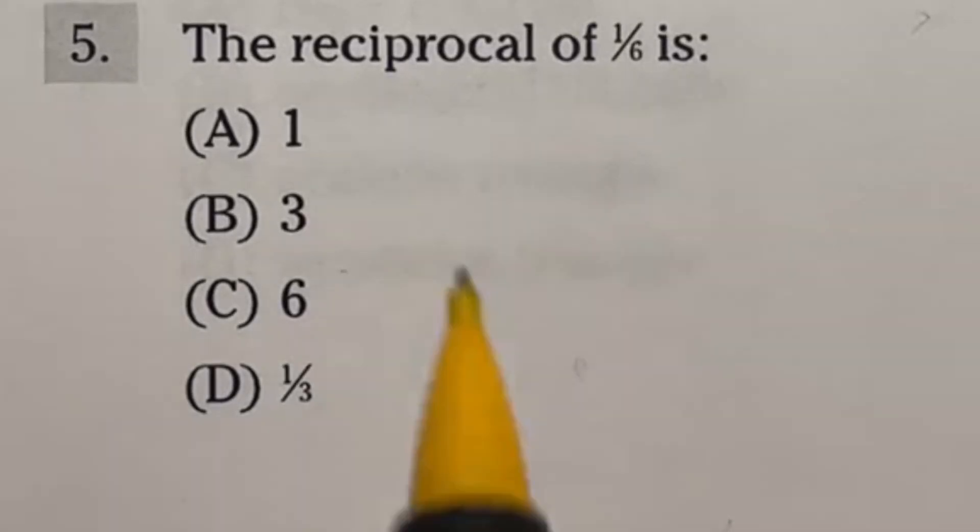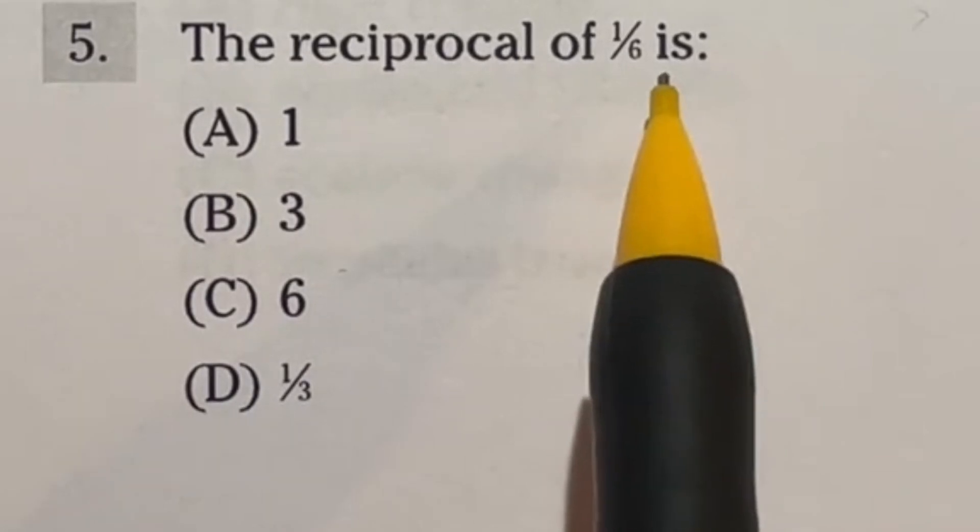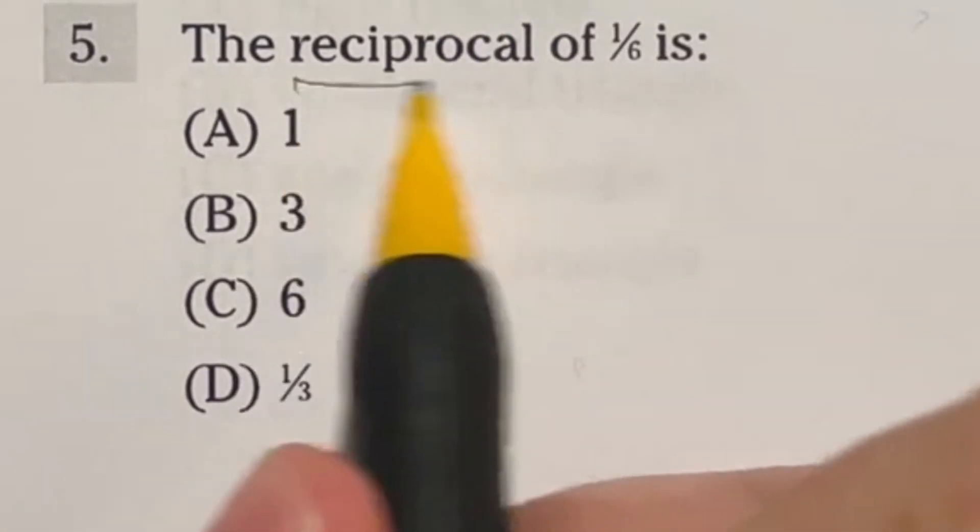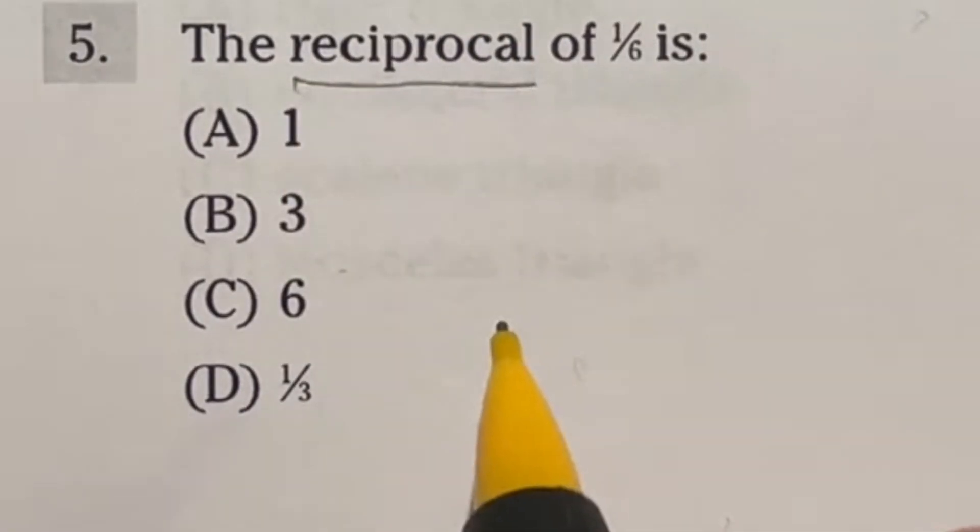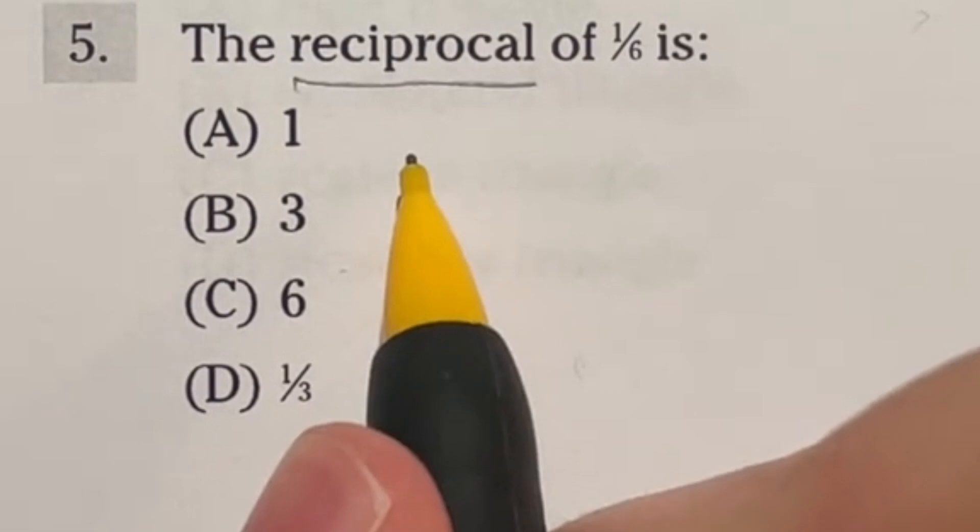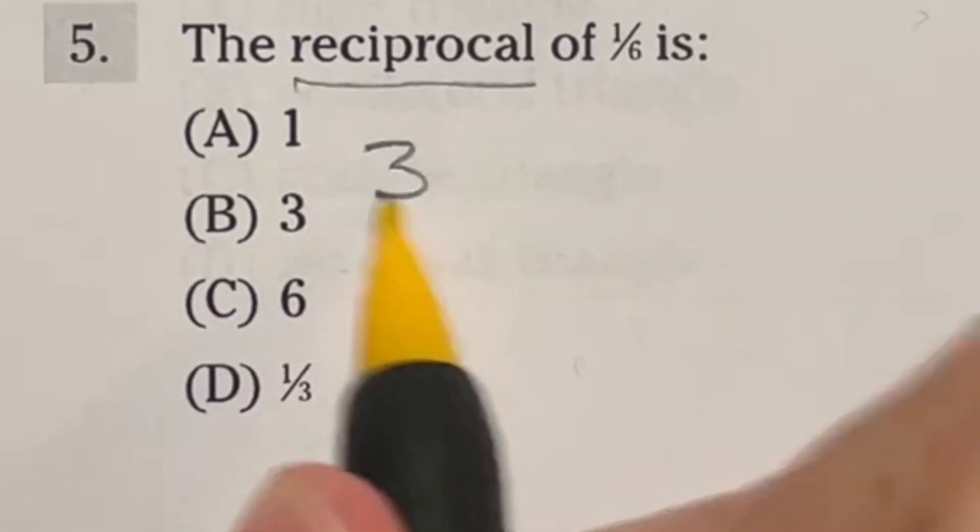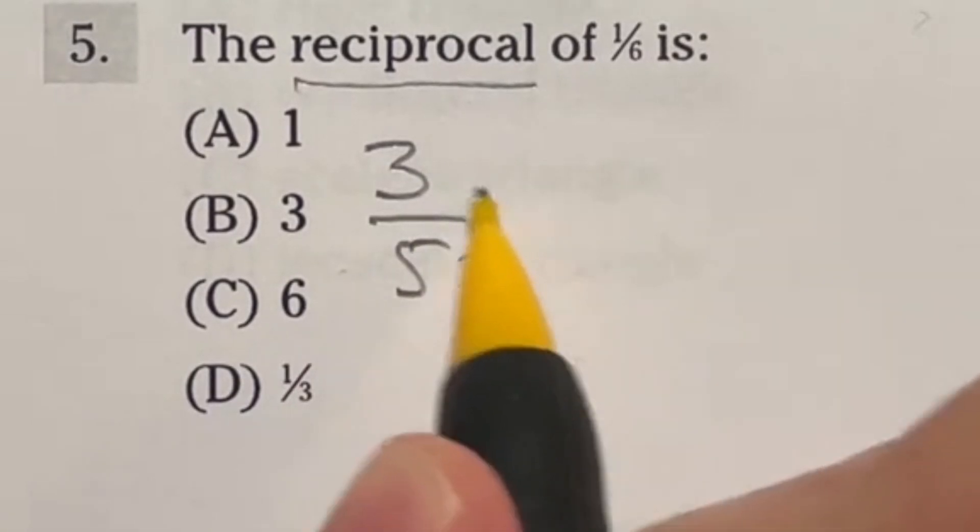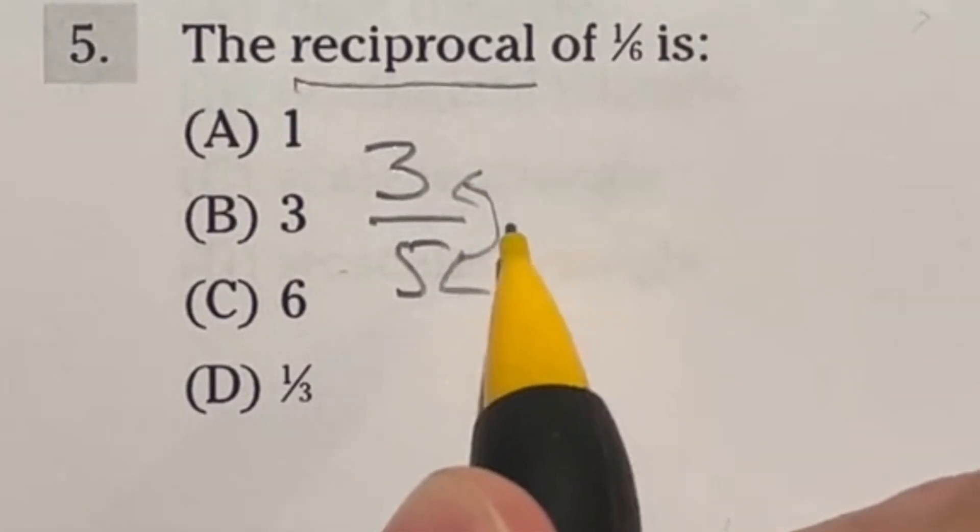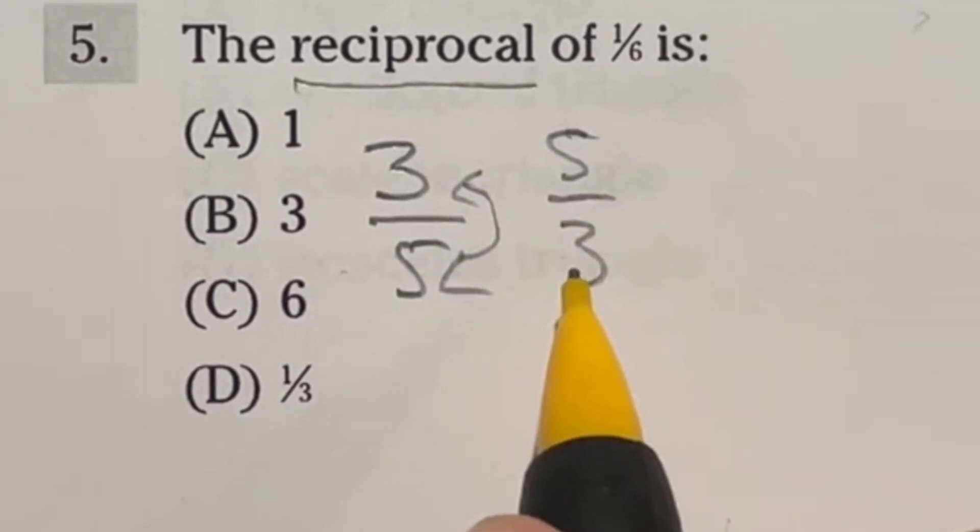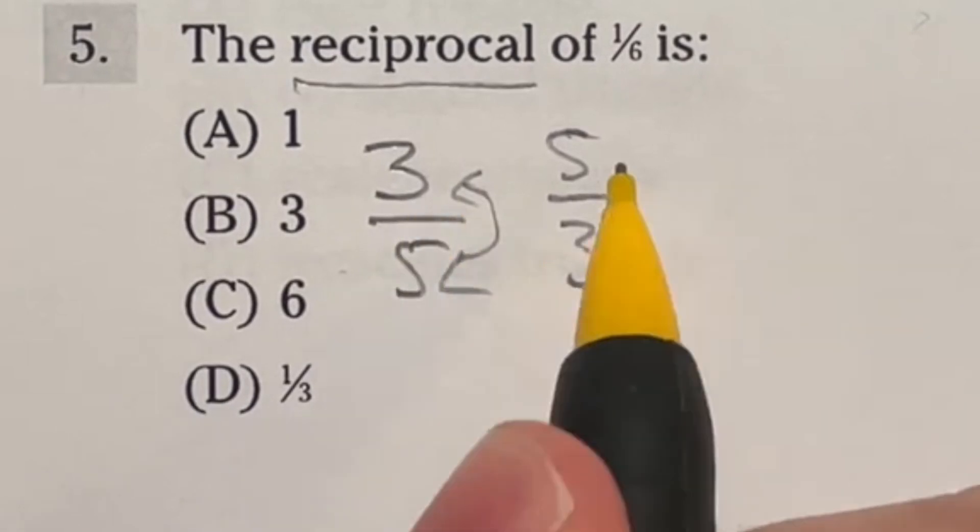So number five says the reciprocal of one over six is what? So first off, let's talk. This is straight up a definition question. It would take you one second to do if you knew what reciprocal means. So let's talk about what reciprocal means. Reciprocal means like if you have any type of fraction, let's say three over five. The reciprocal is when you just flip that fraction upside down. So like this would become five over three. All right. So reciprocal is just that easy. It just means you flip it upside down.